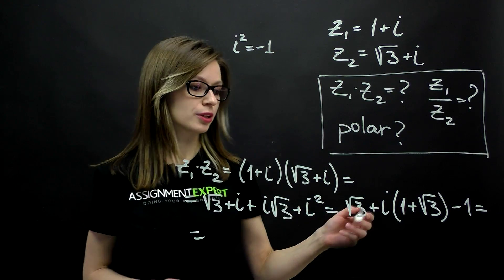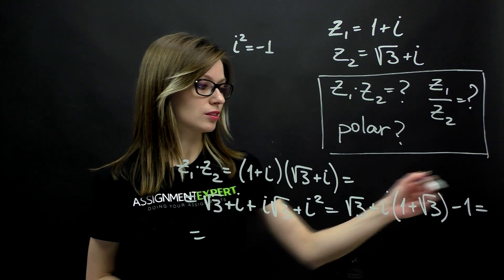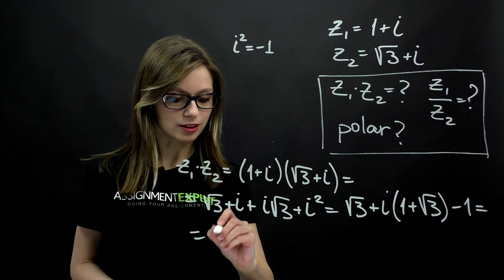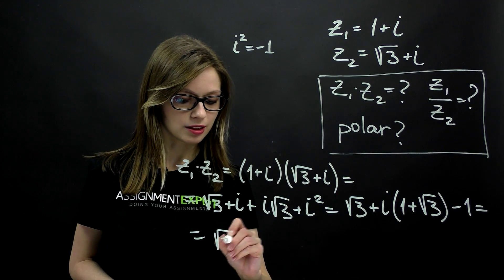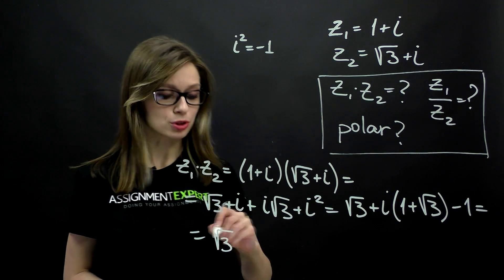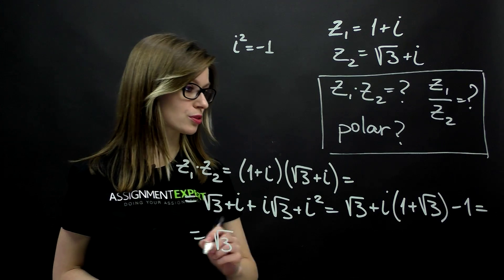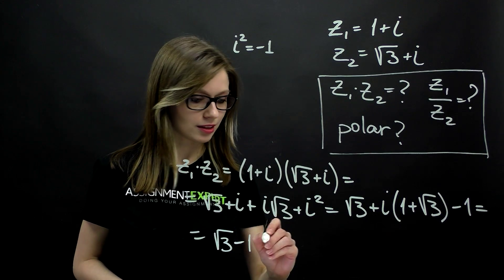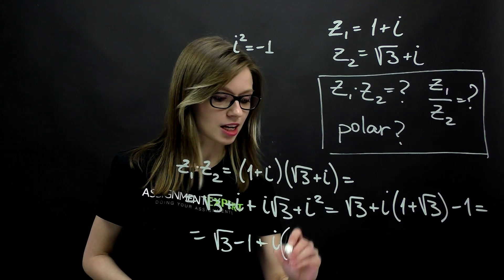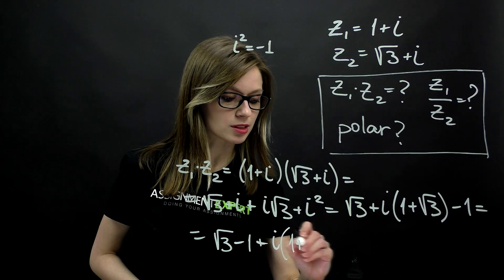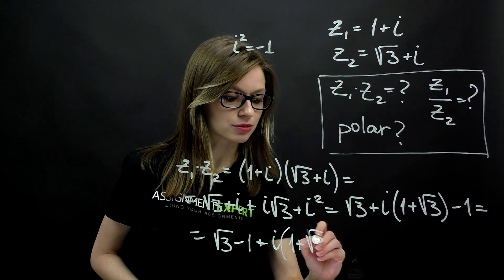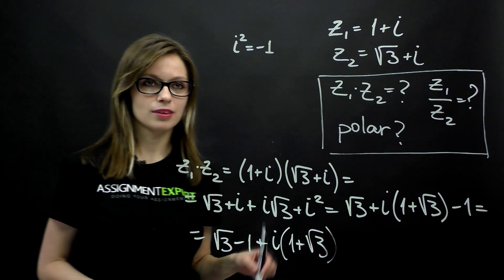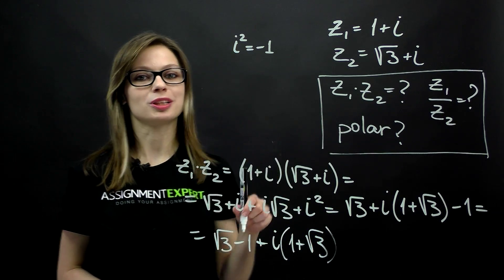Now if we group the real numbers, we'll obtain the following: square root of 3 minus 1 plus i times 1 plus square root of 3. That's it with multiplication.